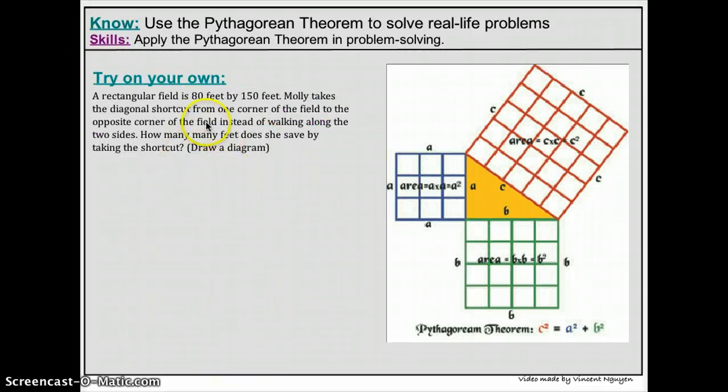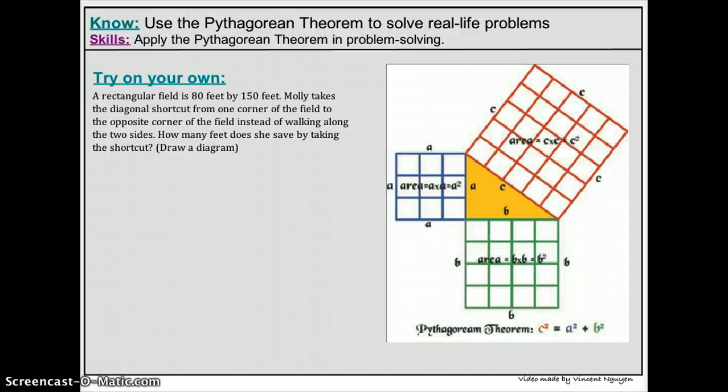So let's try an example on your own. Work the problem using the Pythagorean Theorem and follow the example that I just did and try this on by yourself. Then after that, we'll check and see how you did. The problem says a rectangular field is 80 feet by 150 feet. Molly takes the diagonal shortcut from one corner of the field to the opposite corner of the field instead of walking along the two sides. How many feet does she save by taking the shortcut? It says to draw a diagram. So go ahead and pause your video and try this problem on your own.